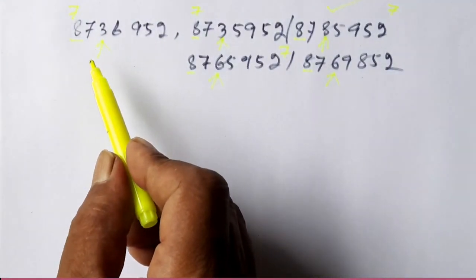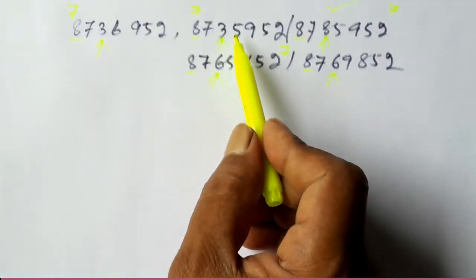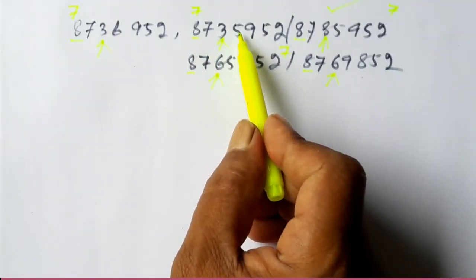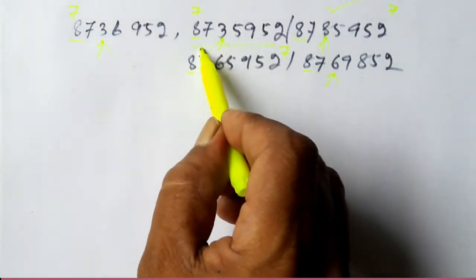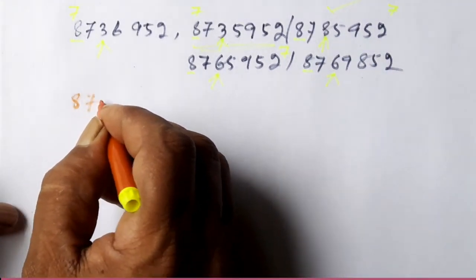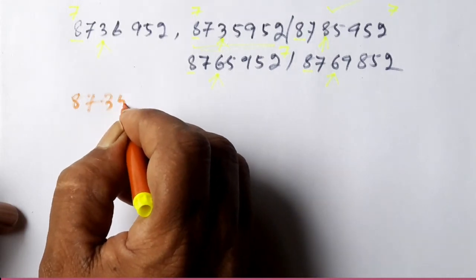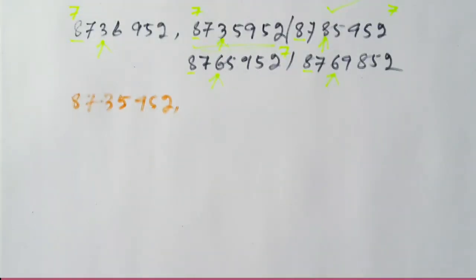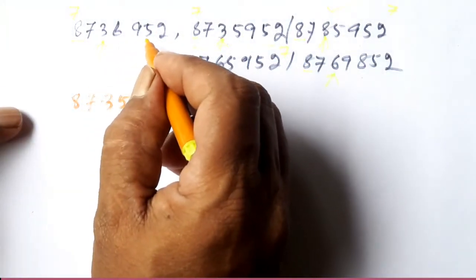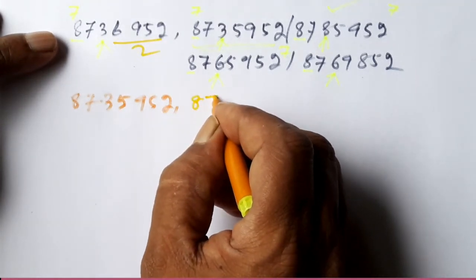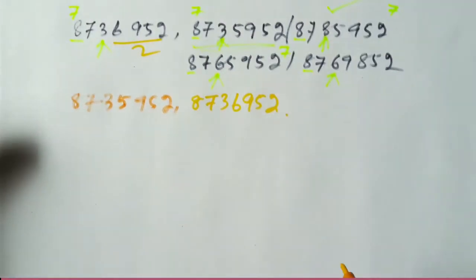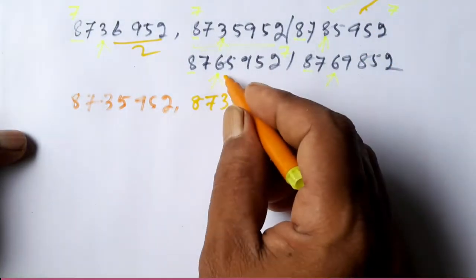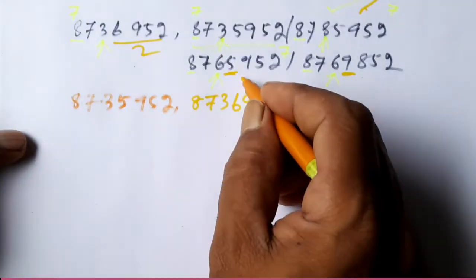Now we find the smallest among the remaining. In between the numbers with 3 in the third place, the fourth digit is 6 in one and 5 in the other — so the one with 5 is smallest. We write that first: 8735952. The second number in ascending order is 8736952. The number with 8 in third place is the largest and will be written last.